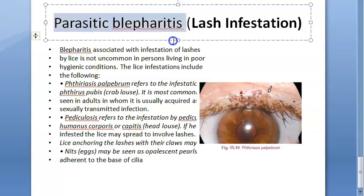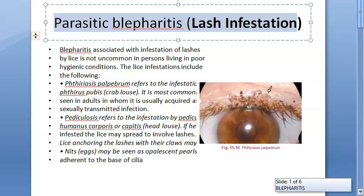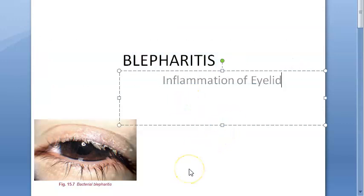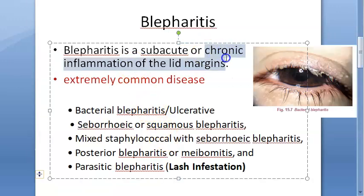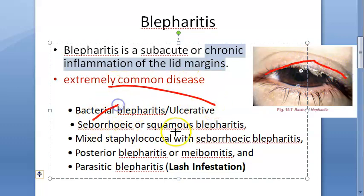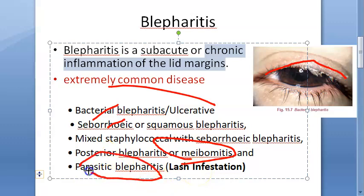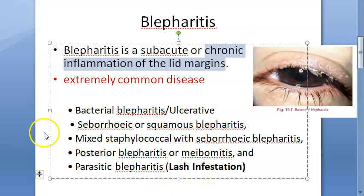In this video, let us look at parasitic blepharitis or lash infestation. Blepharitis is a subacute chronic inflammation of the lid margin — extremely common. It can be caused by bacteria, dandruff, blocked Meibomian glands, or parasites. Now let us look at parasitic blepharitis specifically.